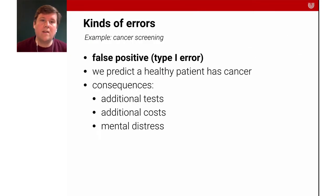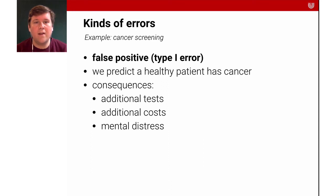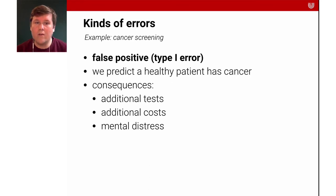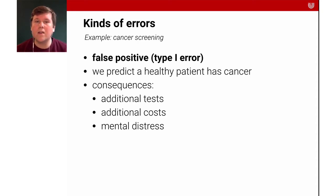First, let's reconsider the kinds of errors that can happen. We already touched upon these, but just to make this clear again — in a binary classification problem, we have two kinds of errors. We could have the false positive, the so-called type 1 error. In the example of cancer screening, this would be predicting that a healthy patient has cancer.